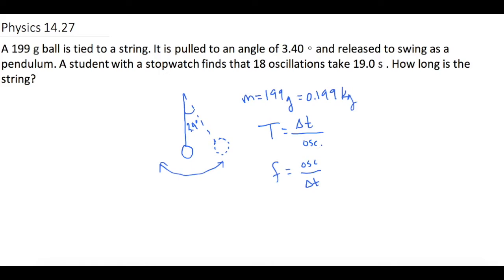I'm going to solve for T, it'll make our algebra a little bit easier. So T equals 19 seconds divided by 18 oscillations, which gives us a period of 1.056 seconds.